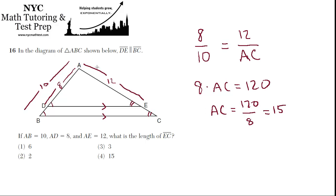So if this whole thing is 15, then EC must be 15 minus 12, which is 3. So EC is 3.